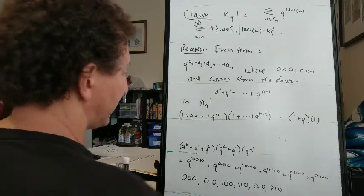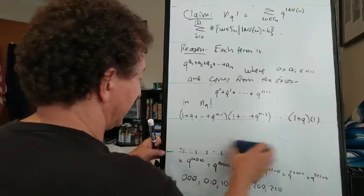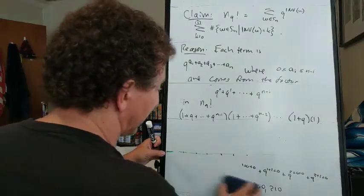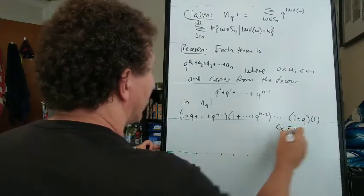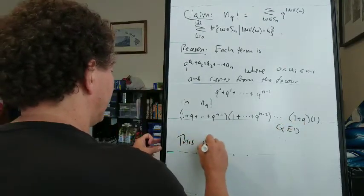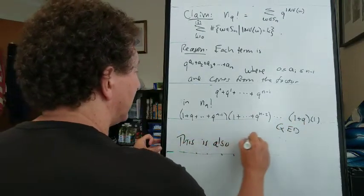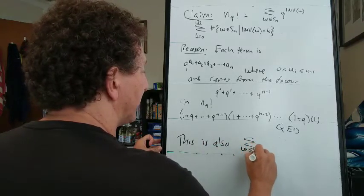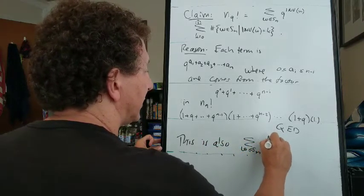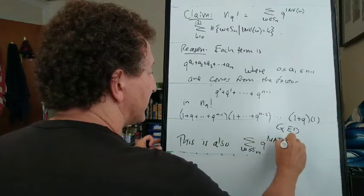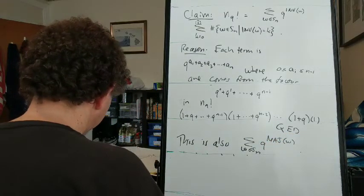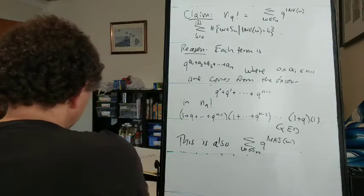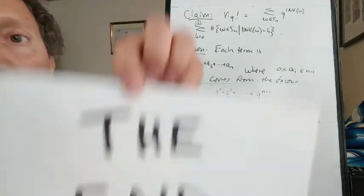And of course, since major index is distributed just like inversions, this is also a sum over all permutations in S n of q to the major index of that permutation.